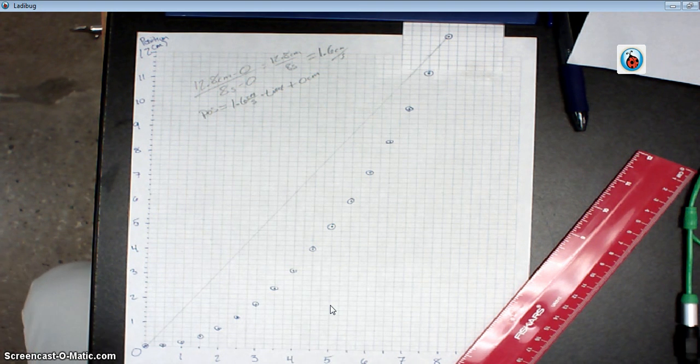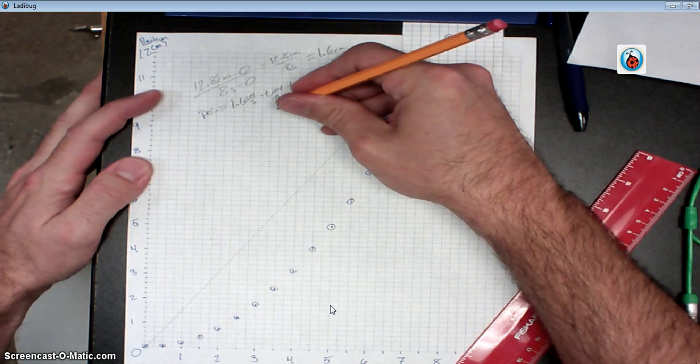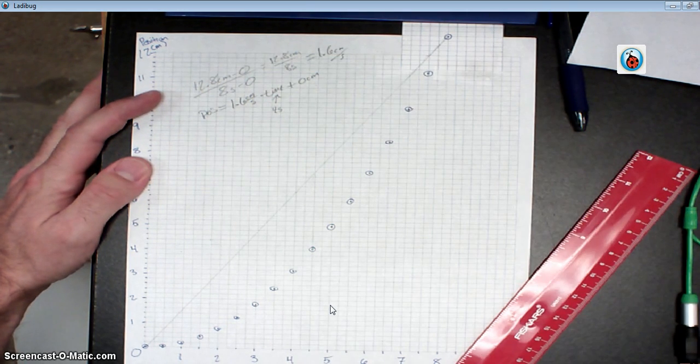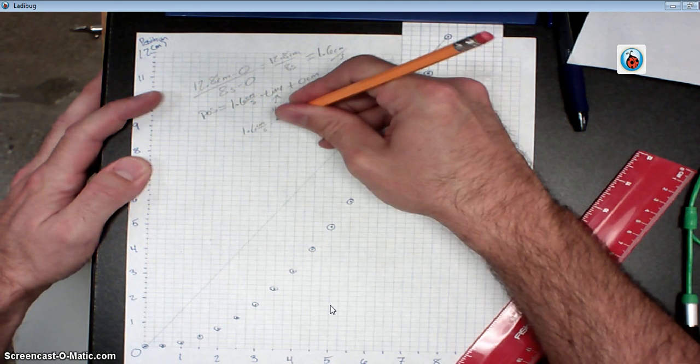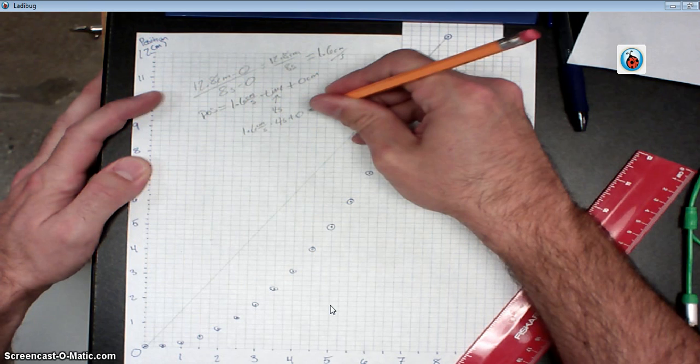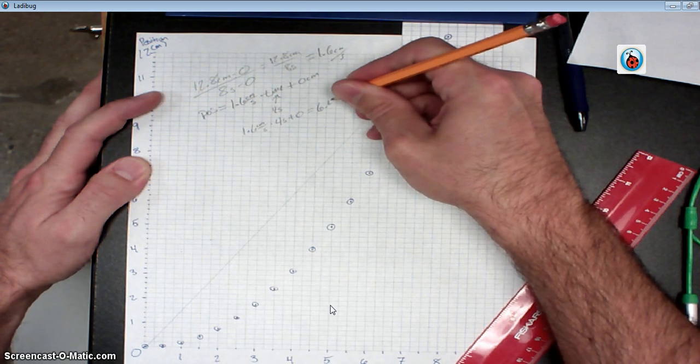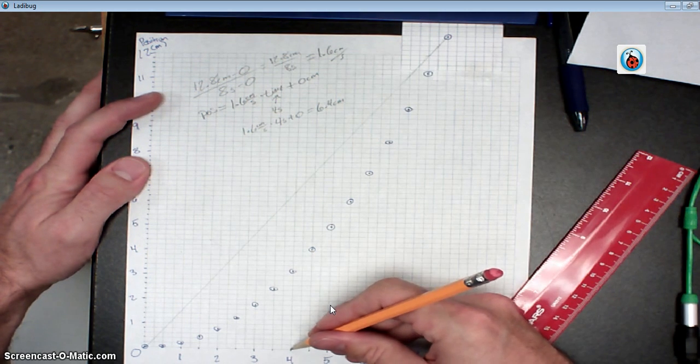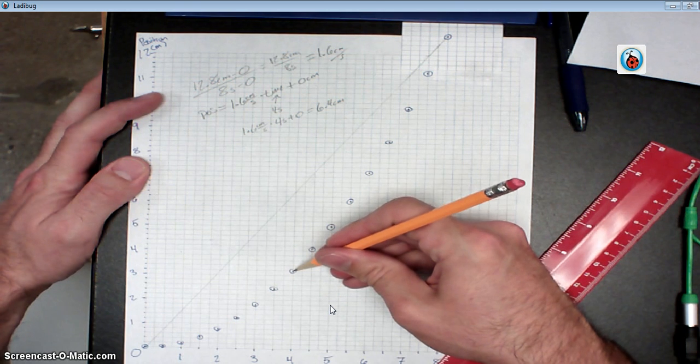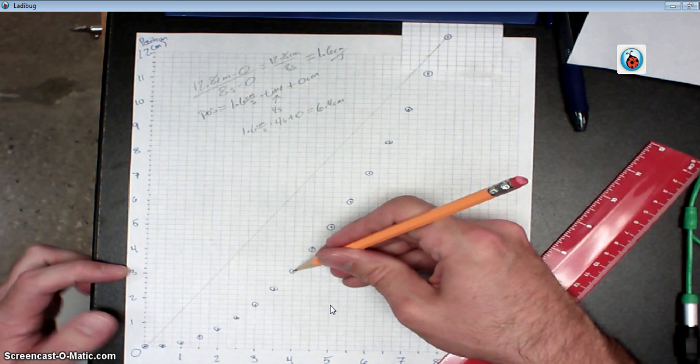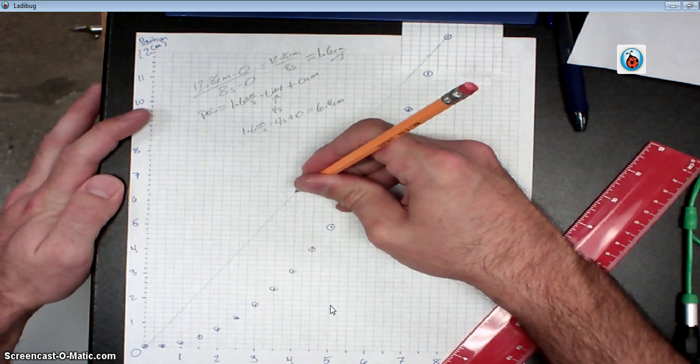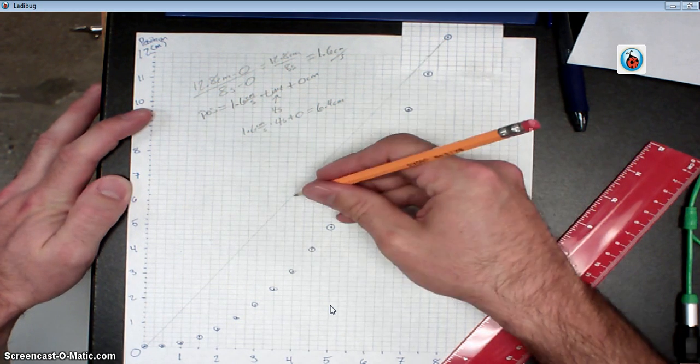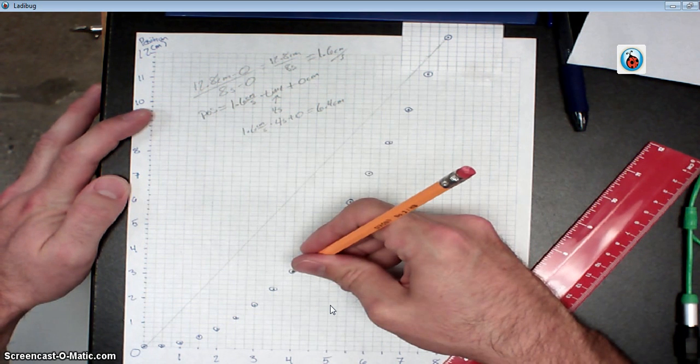Problem is that this doesn't model this data very well. And to show you what I'm talking about, if I put in a value here, 4 seconds, 1.6 centimeters per second times 4 seconds plus 0. That works out to be 6.4 centimeters. And so if I go to 4 seconds, here's my data point. It turns out it's at 3 centimeters. But my mathematical model predicted that it should be up here at 6.4 centimeters, which is nowhere close to where my actual data point is.